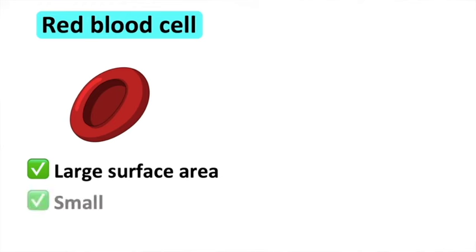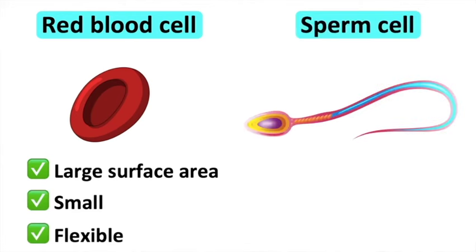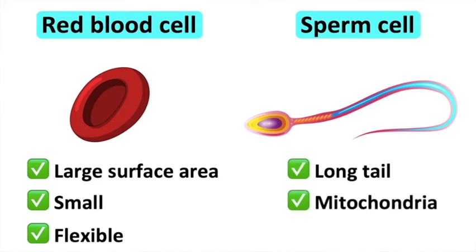Red blood cells are also small and flexible so they can be carried through blood vessels. Sperm cells function to transfer genes from a male's body to a female gamete. Sperm cells have a tail which allows them to swim towards the egg cell, and they contain many mitochondria to supply ATP for energy. The head of a sperm cell contains enzymes, which are released to help break through the outer membrane of egg cells.